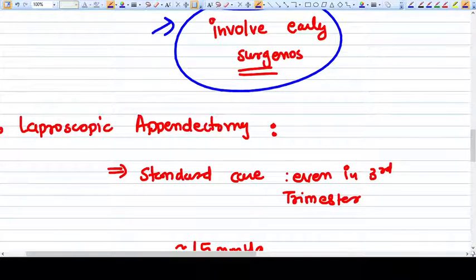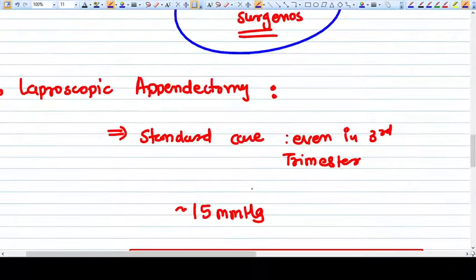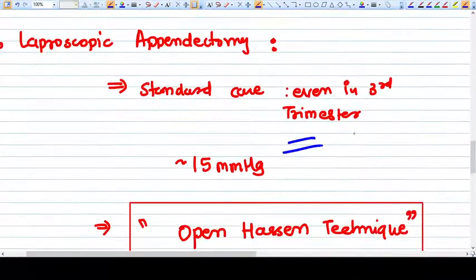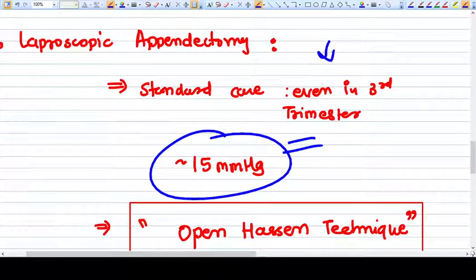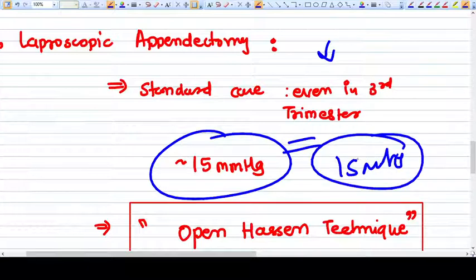Surgery can be done by either open or laparoscopic approach. Laparoscopy is the increasing trend, and laparoscopic appendectomy is standard care in today's surgical field. Even in the third trimester it can be done because 15 mmHg intraperitoneal pressure is well tolerated by the fetus.